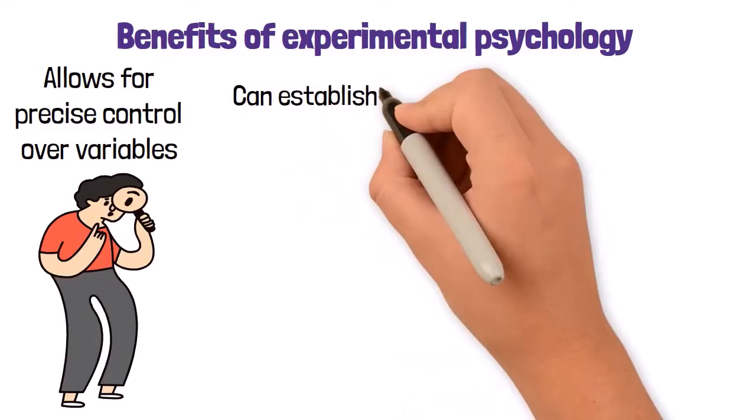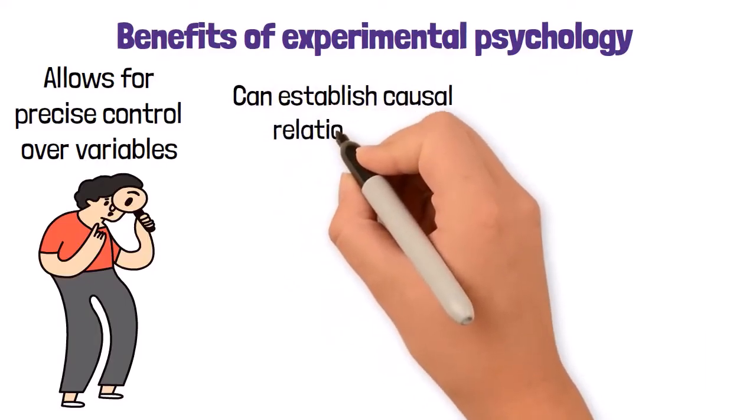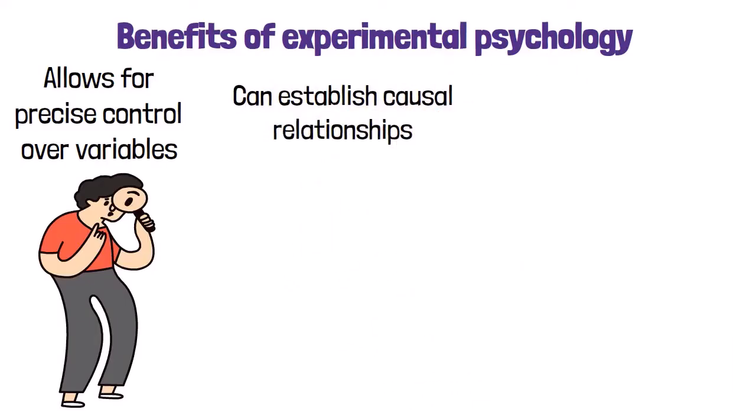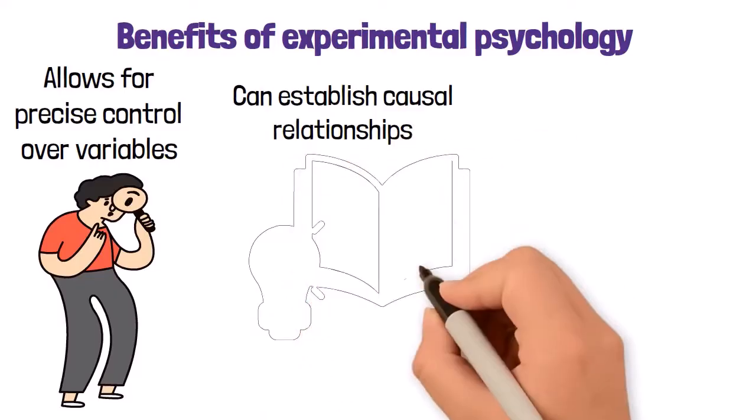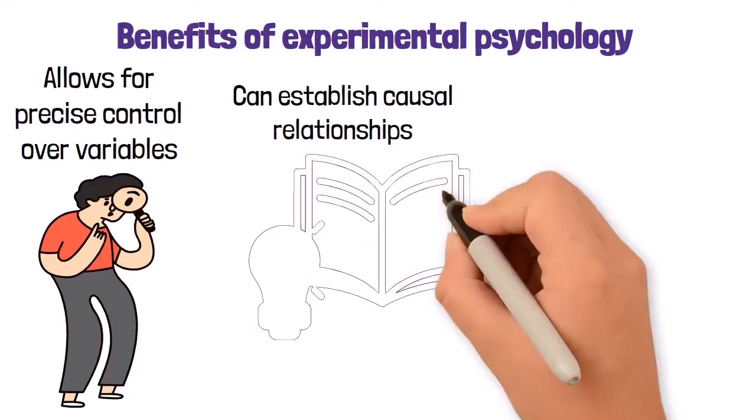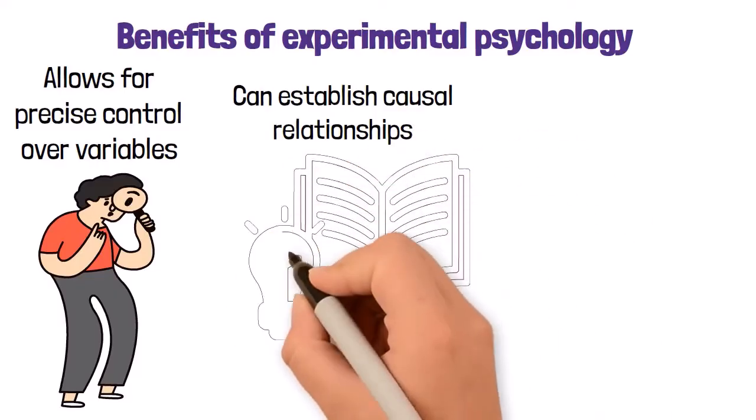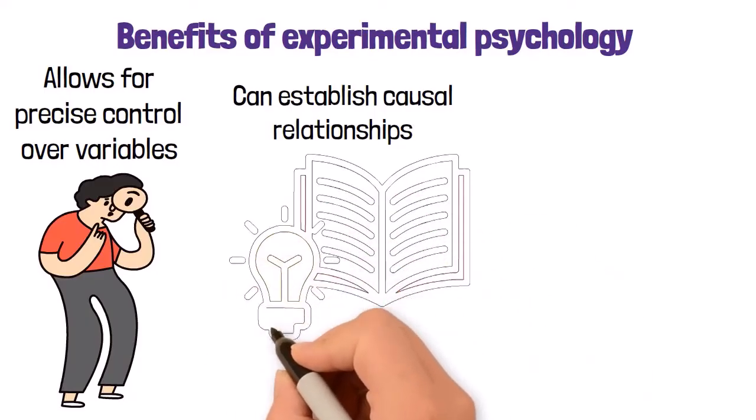Secondly, experimental psychology can establish causal relationships. Unlike correlational studies, experiments can demonstrate that changes in one variable directly cause changes in another, providing stronger evidence for theories.